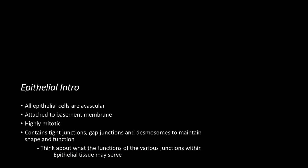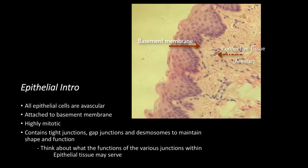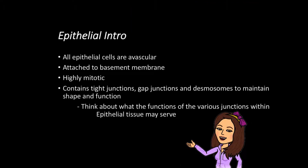All epithelia are avascular, meaning they lack a blood supply. They depend on their connection with a basement membrane for diffusion of nutrients and gases from an underlying connective tissue, like areolar connective tissue. In epithelia, the cells attached to a basement membrane are highly mitotic. All epithelial tissue depends on intracellular junctions like tight junctions, gap junctions, and desmosomes to maintain their shape and connection to nutrients.